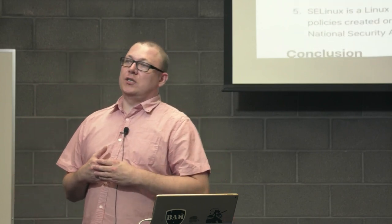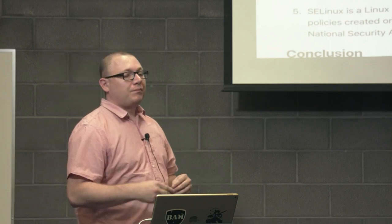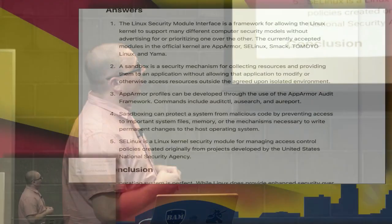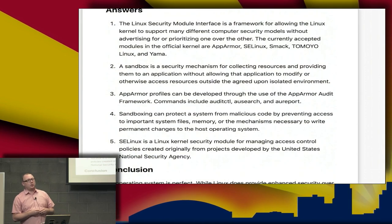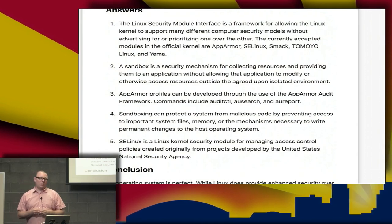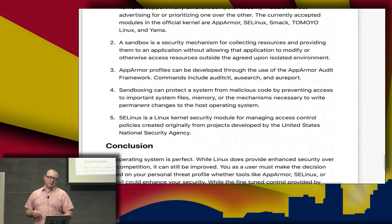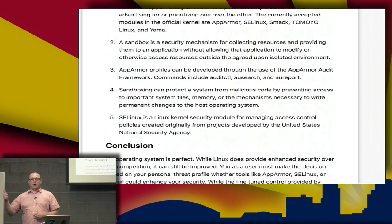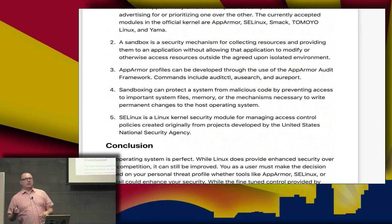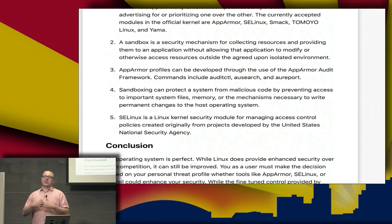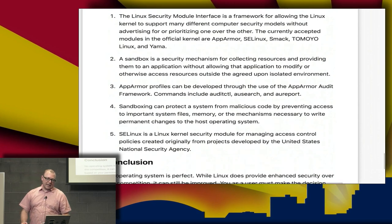Let's answer our performance objectives questions. The Linux security module interface is a framework for allowing the Linux kernel to support many different computer security modules without advertising for or prioritizing one over the other. The currently accepted modules in the official kernel are AppArmor, SELinux, SMACK, Tomoyo Linux, and Yama. Those are the alternatives to SELinux and AppArmor I was telling you about.